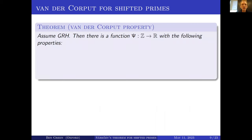So what is the plan if we're not going to use a density increment strategy? What I do is prove that the shifted primes have a stronger property than being intersective, which is called the van der Corput property. Rather than stating that in the abstract, let me tell you the theorem that I shall prove.